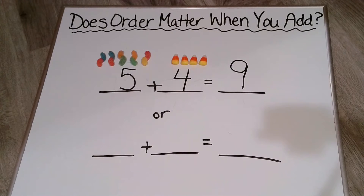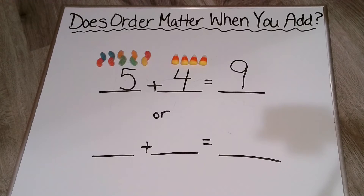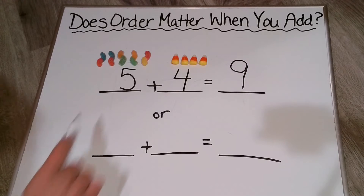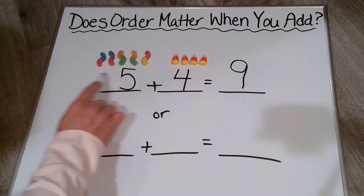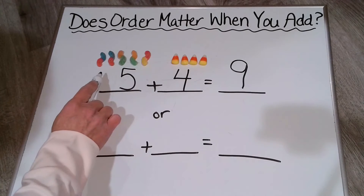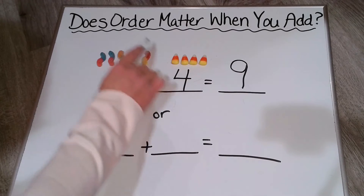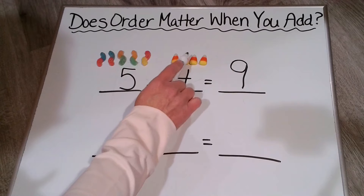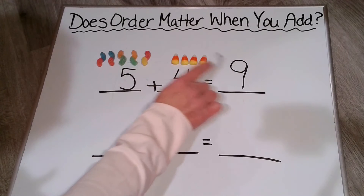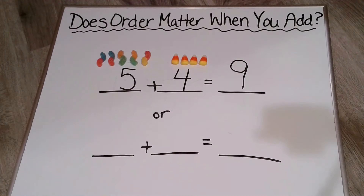Let's use another strategy too, let's use counting on. So when we count on, usually we would put the bigger number in our brain and then count on the smaller number, so it would be a little bit easier for us. So we're going to put our 5 in our head: 5, 6, 7, 8, 9. So there we have 9.